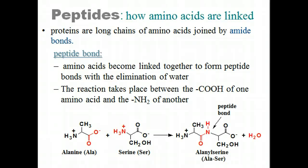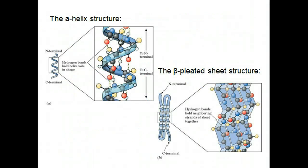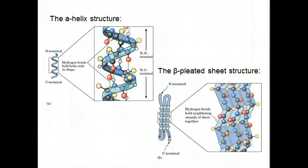The linear sequence of amino acids in a protein is the protein's primary structure. For example, human insulin is made up of two polypeptide chains with a total of 51 amino acids. The primary structure determines the folding of the proteins into their secondary and tertiary structures. The secondary structure of a protein is the conformation of amino acids in localized regions of a polypeptide chain. The most common types of secondary structure are alpha helix and beta pleated sheet. Both these structures are held together by hydrogen bonds.